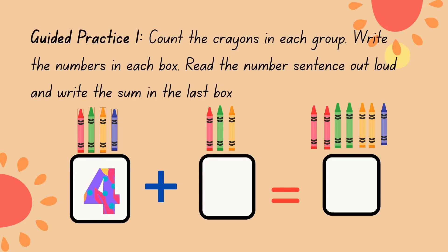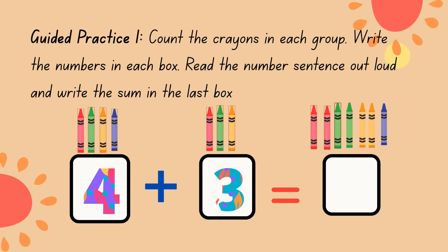Let's count the second group: 1, 2, 3. 4 plus 3 equals 1, 2, 3, 4, 5, 6, 7. 4 plus 3 equals 7 crayons.